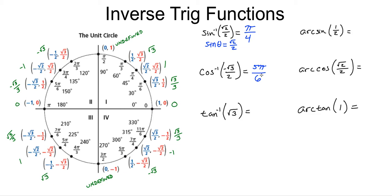For the inverse tangent of root 3, normally there are two places where the tangent equals root 3 — one in the first quadrant and one in the third quadrant. But since the inverse tangent is restricted to the first and fourth quadrants, the only possible value is pi over 3.